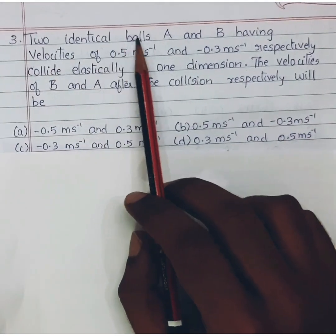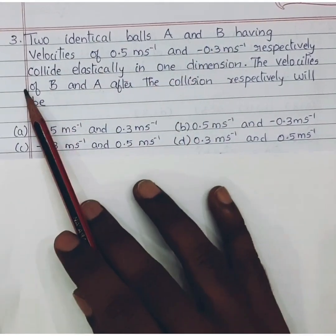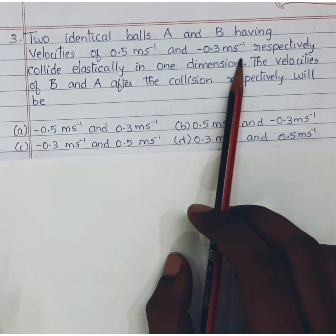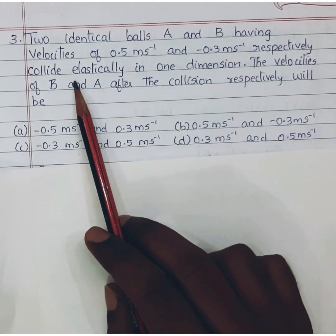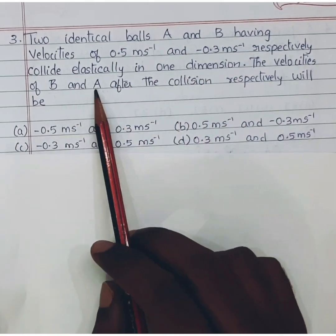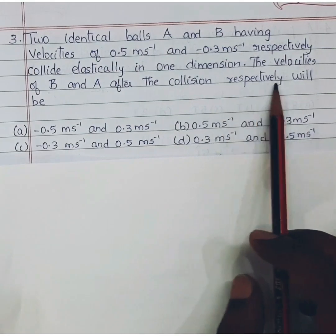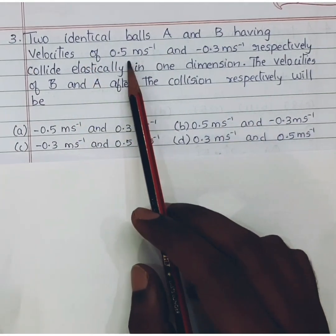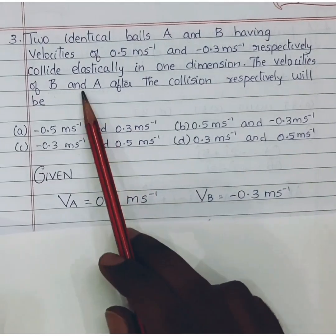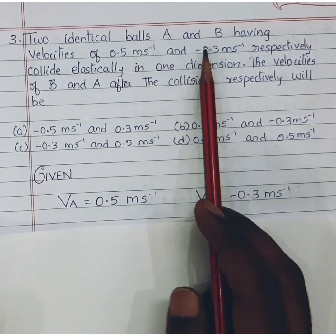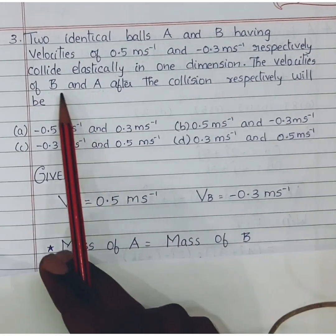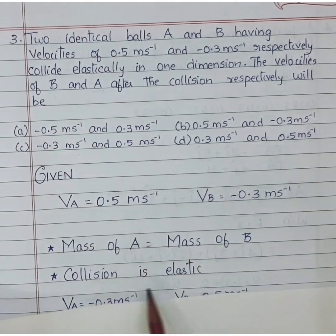Two identical balls A and B having velocities of 0.5 meter per second and minus 0.3 meter per second respectively collide elastically in one dimension. The velocities of B and A after the collision respectively will be? So here velocity of A is given and velocity of B is given. Two identical balls A and B is given, that is mass of A is equal to mass of B, and also given they collide elastically.